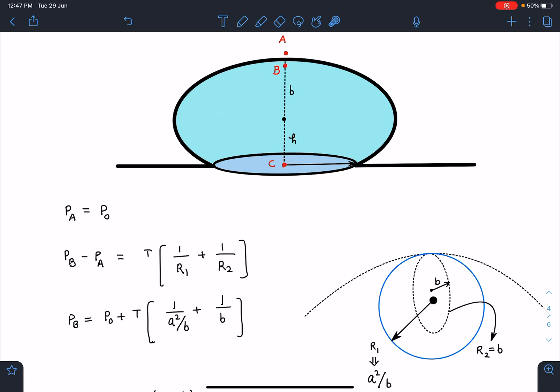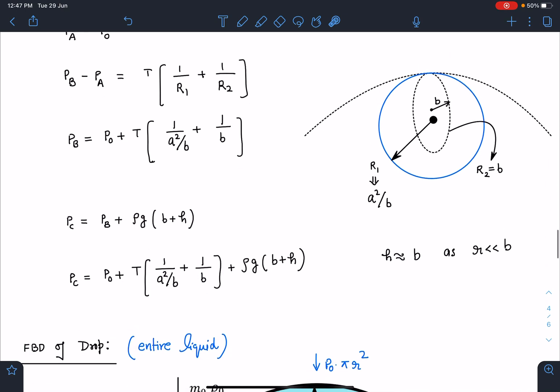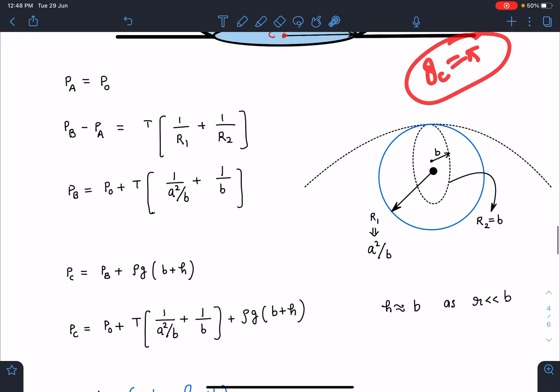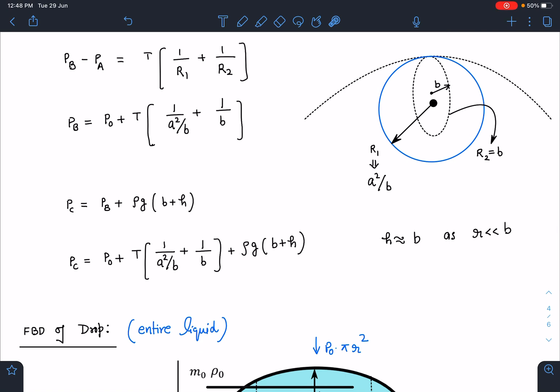I'm taking r to be very very small, corresponding to contact angle θc equal to π. If contact angle is nearly 180 degrees and b is almost equal to h because the patch radius is very small, then b plus h becomes 2b.